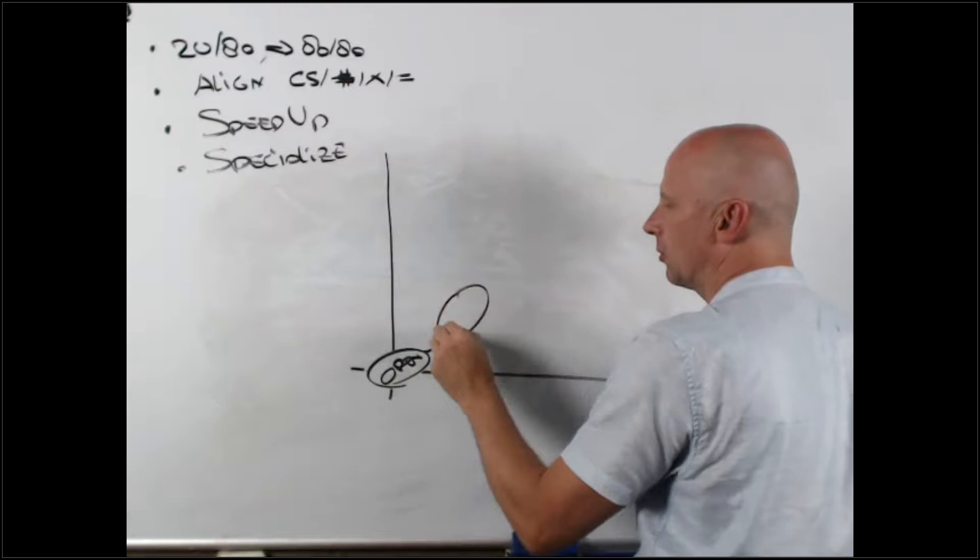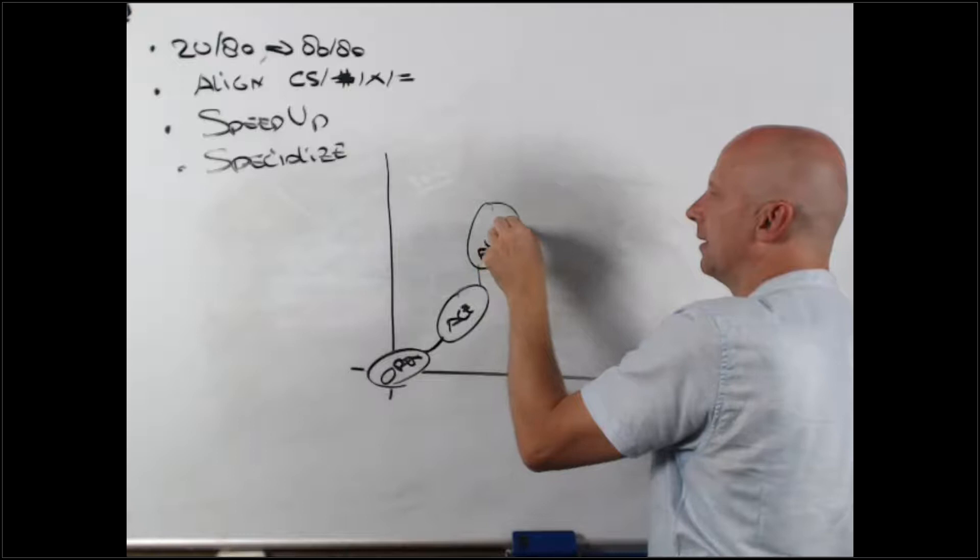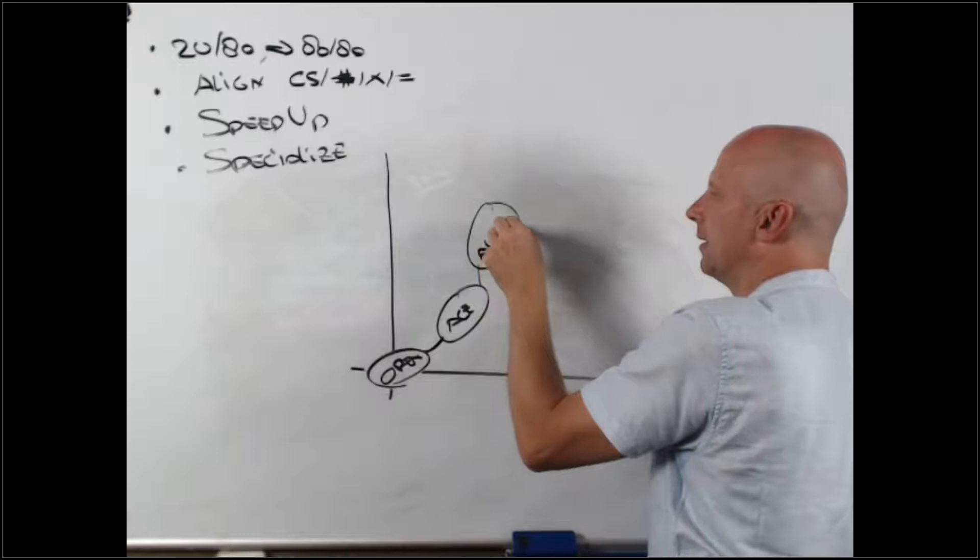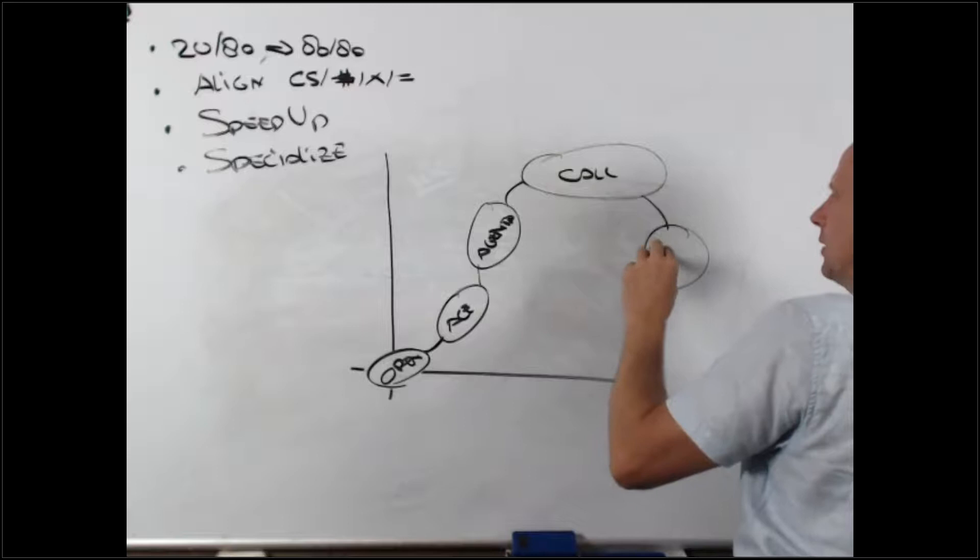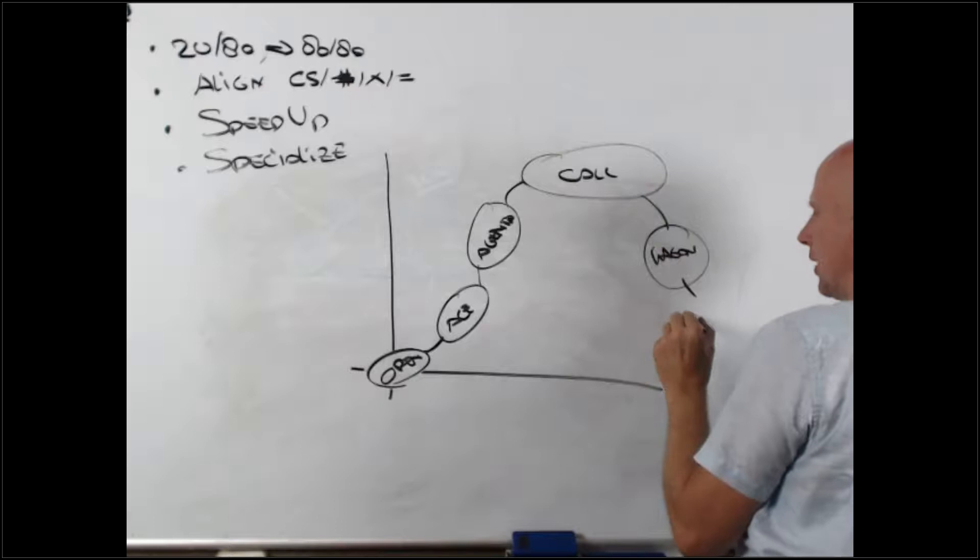We're going to open the call. Following the opening on the call, we're going to run an ACE. I'm going to explain to you what it is in a second. We're going to run the agenda. We're going to perform the call, whatever it is—demo, disco. We're going to close it, which we call the wagons. Then we're going to push through to the next steps: action.